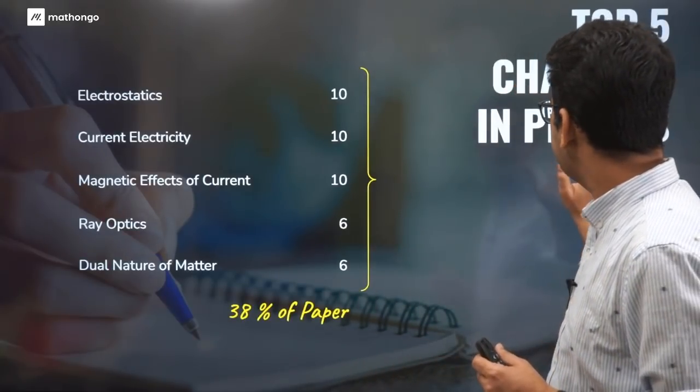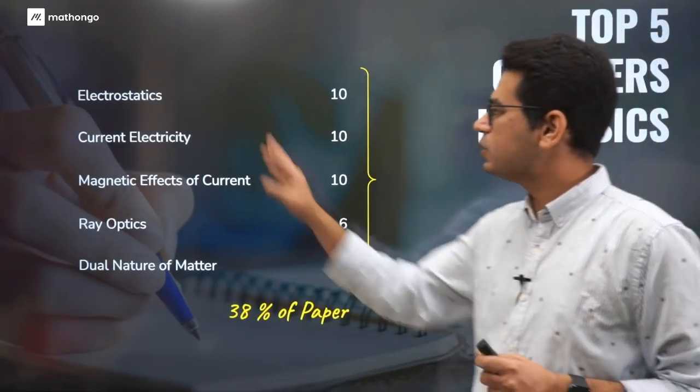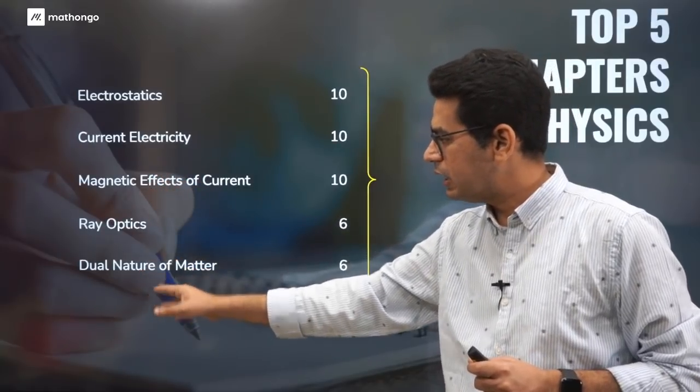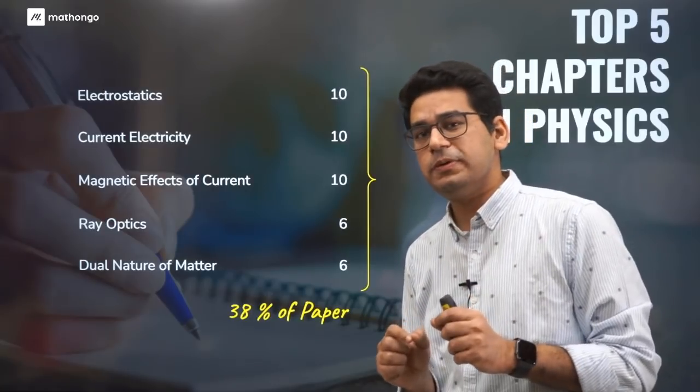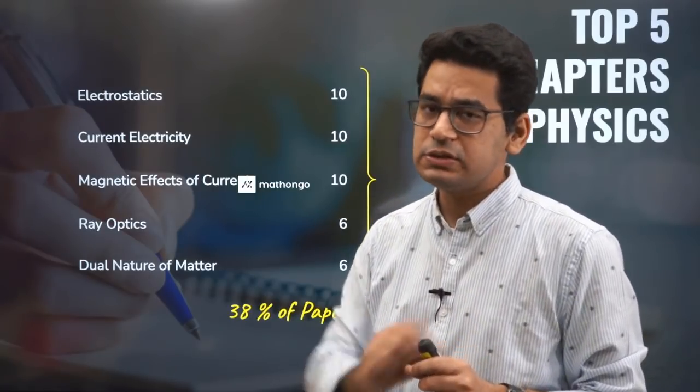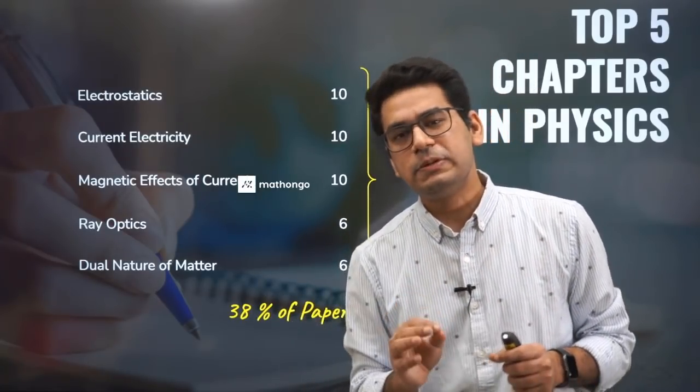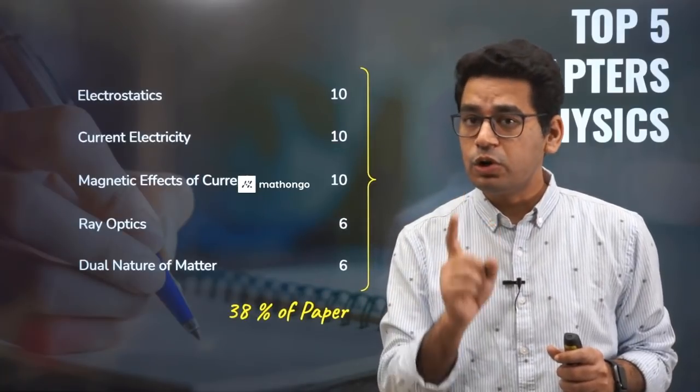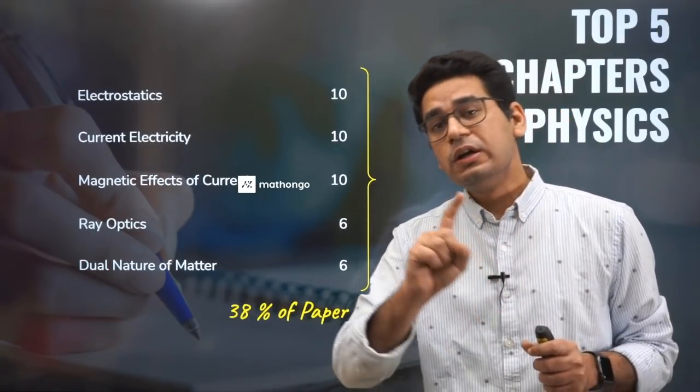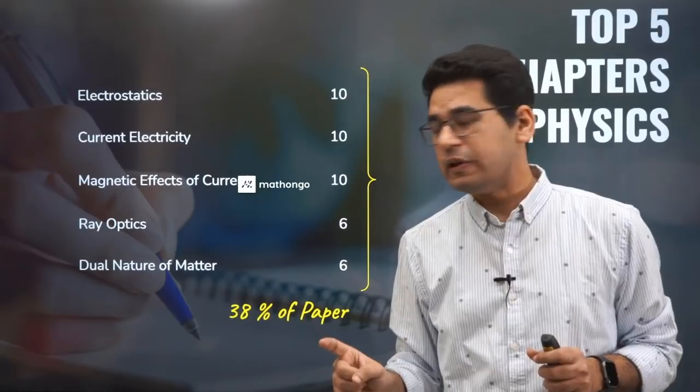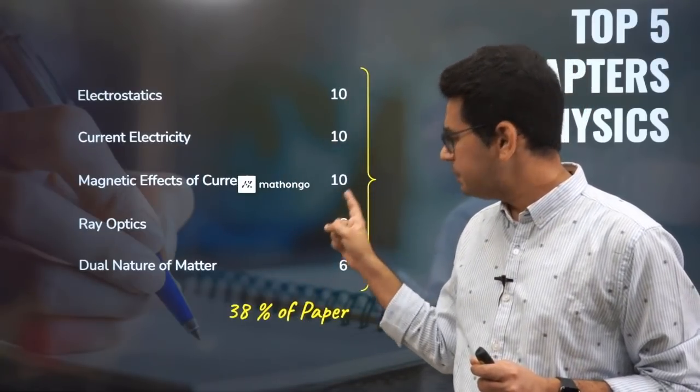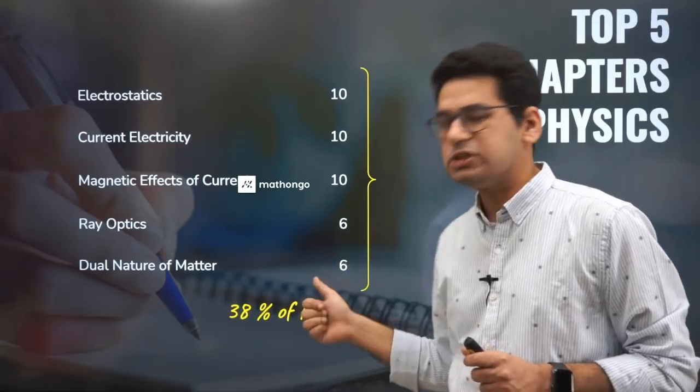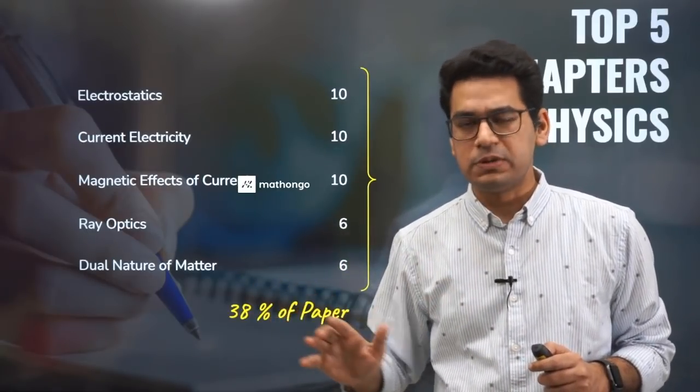Top five chapters in physics: electrostatics, current electricity, magnetic effect of currents, ray optics, and dual nature of matter. This consists of 38% of the paper. These five chapters, do them thoroughly. 38% of marks. Now I'm not talking about number of questions, I'm talking about 38% of the marks roughly are from these five chapters: 10% weightage, 10% weightage, 10% weightage, 6% weightage, 6% weightage.